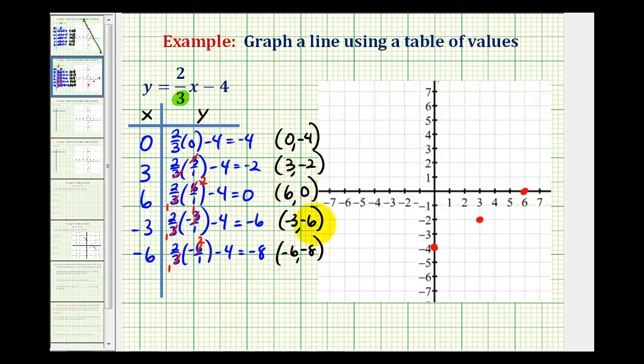And then we have the point negative 3, negative 6, so left 3 units, down 6 units. And the last point, negative 6, negative 8, left 6, down 8, which would be right about here.